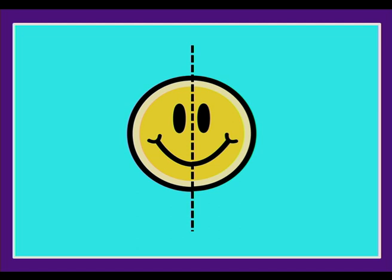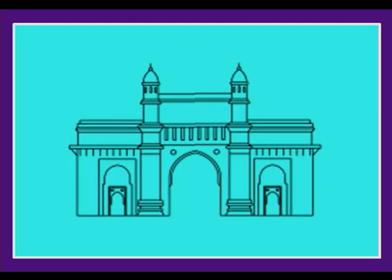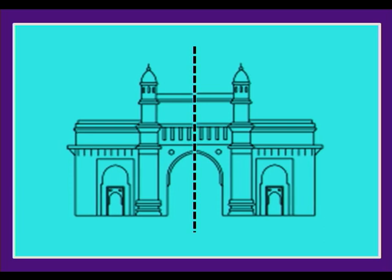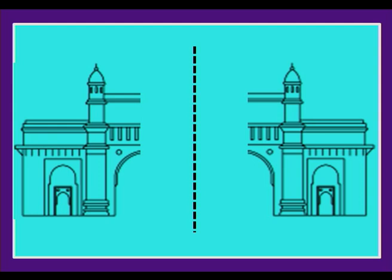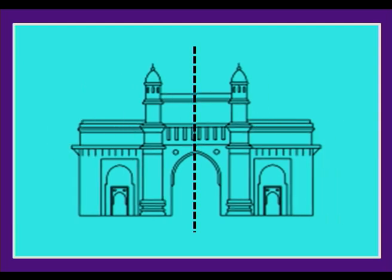What do congruent parts mean? They have the same shape and also the same size. Now take a look at this monument — the Gateway of India, located in Mumbai. Let us draw a vertical line and see what happens. The great monument is divided into two congruent parts.